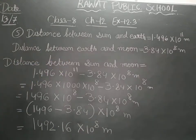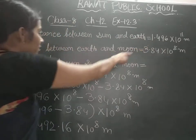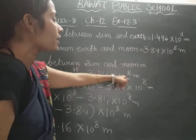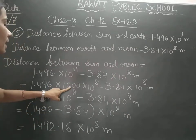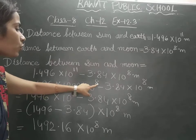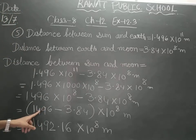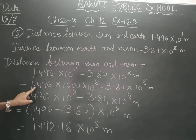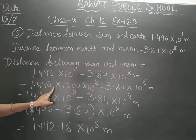So the distance between sun and moon will be the total distance, that is 1.496 into 10 raised to 11, minus the distance of earth and the moon, that is 3.84 into 10 raised to 8 meters. Now here we can write 10 raised to 11 as 1000 into 10 raised to 8, or 10 raised to 3 into 10 raised to 8. Then we can multiply 1000 with 1.496, and this decimal will shift 3 digits to the right side.